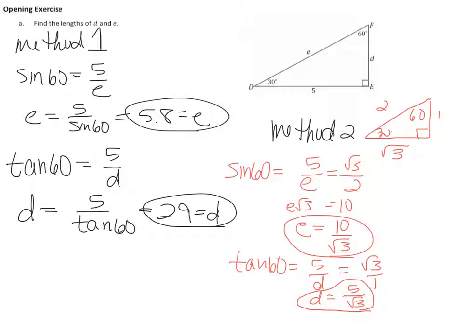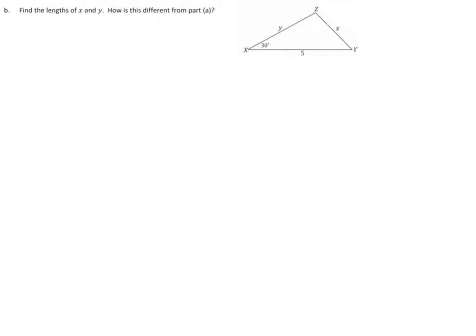Alright, there are your answers. I solved the problem two different ways — the method doesn't matter to me. The second method I compared — I set up ratios with the 30-60-90 triangle and solved it that way. That was the first way we learned how to solve these equations, just by comparing to known sides. Okay, go ahead and find this next one.